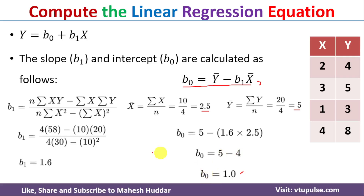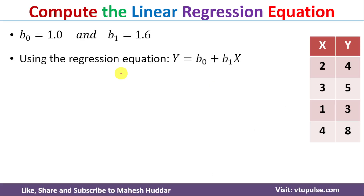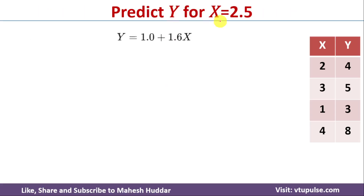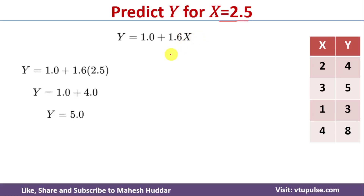Now that we have b0 = 1 and b1 = 1.6, we substitute these into the linear regression equation to get y = 1 + 1.6x. To predict the y value for x = 2.5, we replace x with 2.5: y = 1 + 1.6 × 2.5 = 5. This is how we find the correlation, build the linear regression model, and predict the y value for a given x.